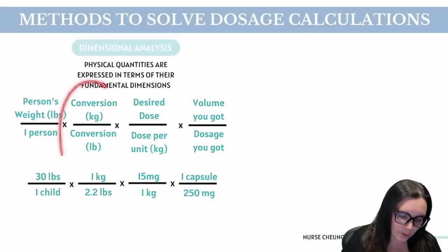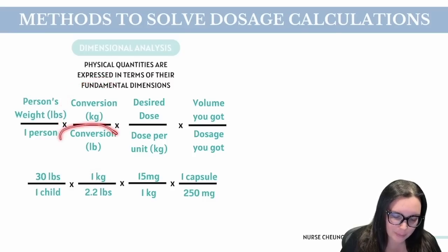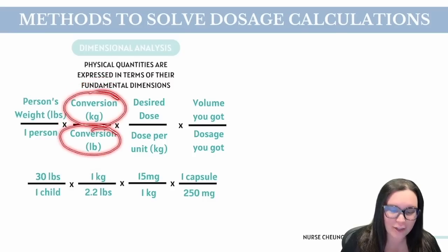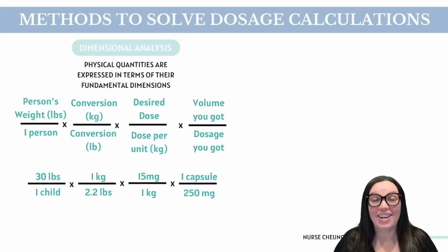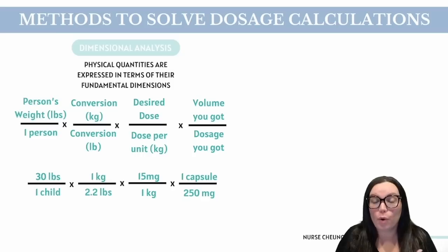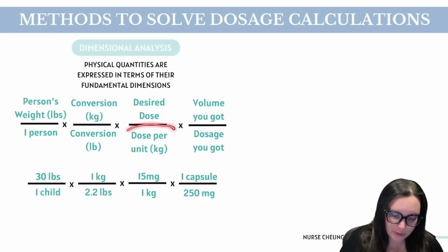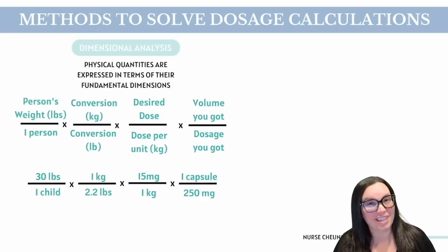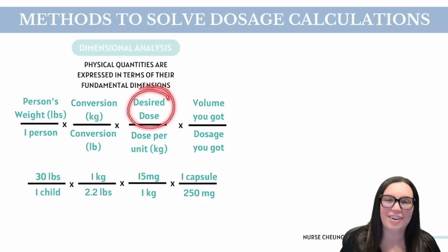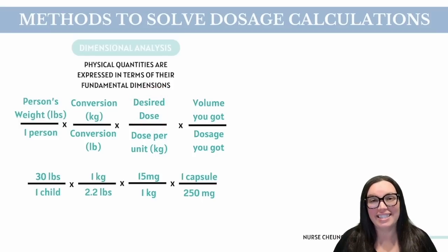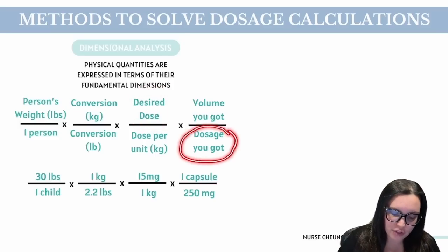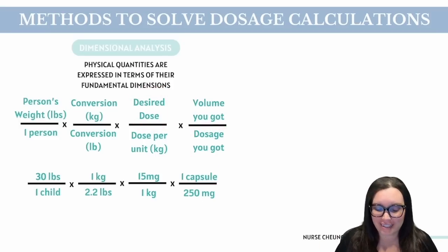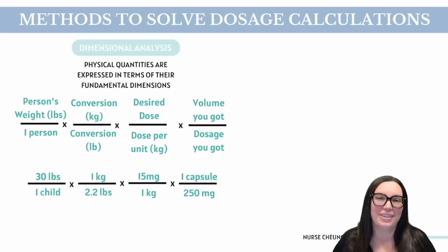Our next fraction is going to be our conversion. We're going to list the pounds on the bottom and the kilograms on the top. Our next fraction is going to be our desired dose — what is actually ordered for this patient. We're going to put the dose per unit, which is usually kilograms, on the bottom and our desired dose on top. And then lastly, it's what's available to us — the dosage we have available in the volume it comes in. Let's get started with some practice questions.